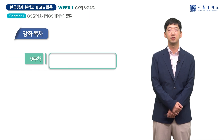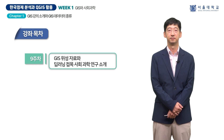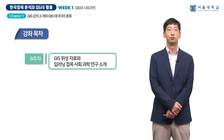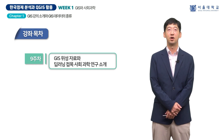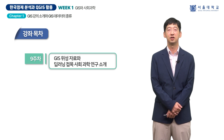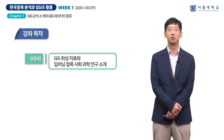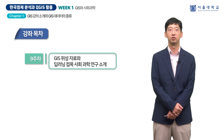9주차에는 GIS 위성 영상 자료와 기계 학습인 딥러닝을 접목한 사회과학 연구를 소개해드립니다. 위성 영상에서 어떤 경제 지표를 추출할 수 있는지 한국과 북한의 예를 통해 설명하고, 딥러닝이 사회과학 연구에 구체적으로 어떻게 활용되는지 보여드리고자 합니다.